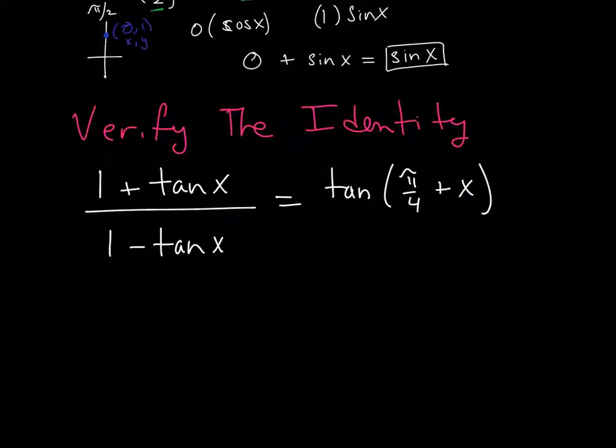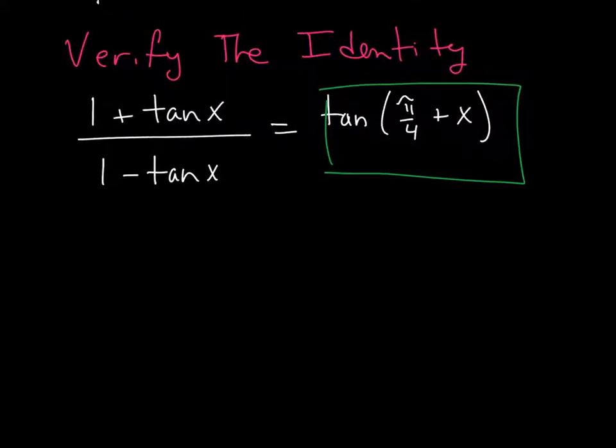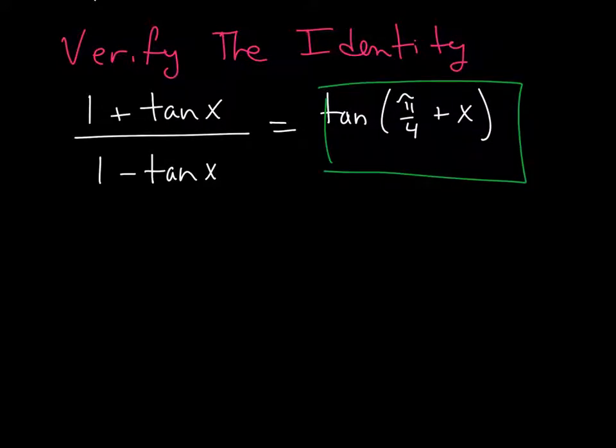All right, so with this identity, remember, there's no reason you have to work on one particular side. I know most of the time we work on the left, but this time I'm actually going to start this a little bit differently. We're going to go ahead and start with the right-hand side. And we want to make that right-hand side equal the left-hand side this time. So, let's go ahead and do this. We're going to break that idea down the same way we did the last one and separate that function.